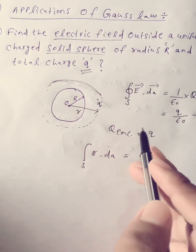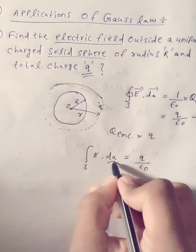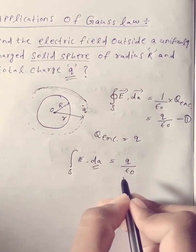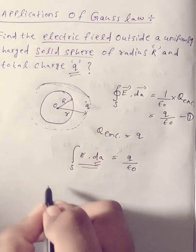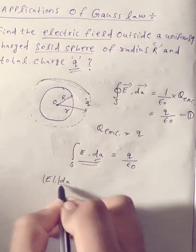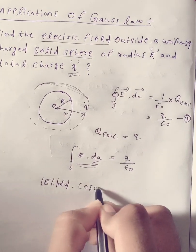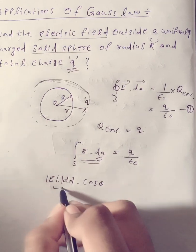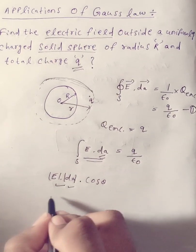The electric field is radially outward, and the area element dA is also in the same direction. Since they are in the same direction, theta equals zero. So the dot product E dot dA becomes E times dA times cos(0), which equals E times dA.